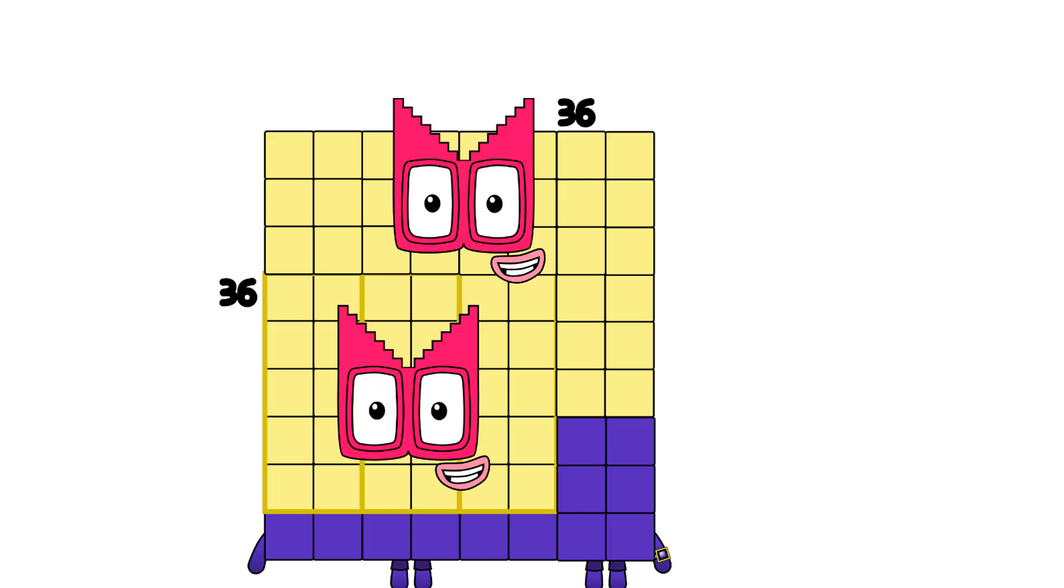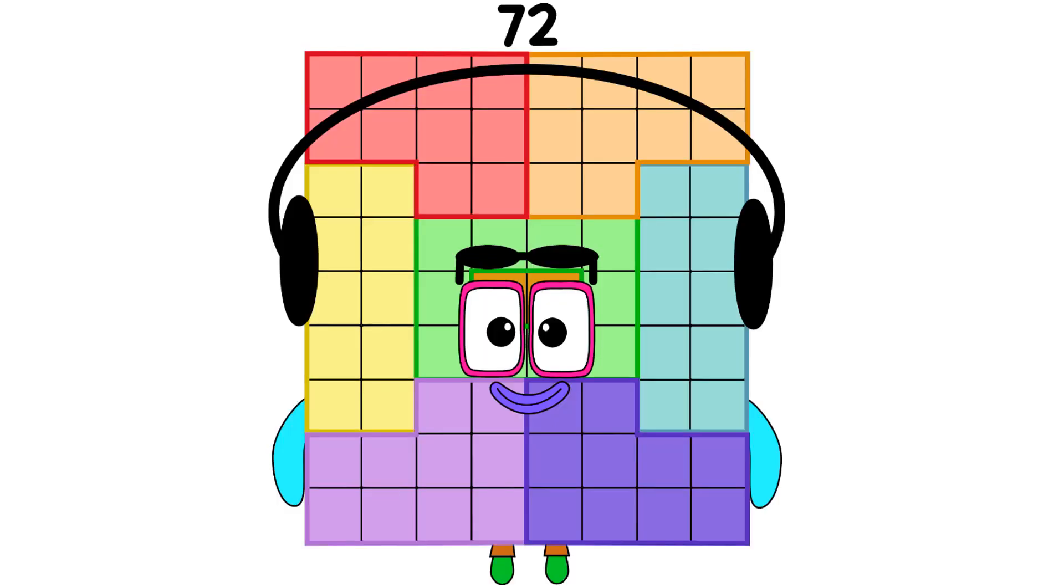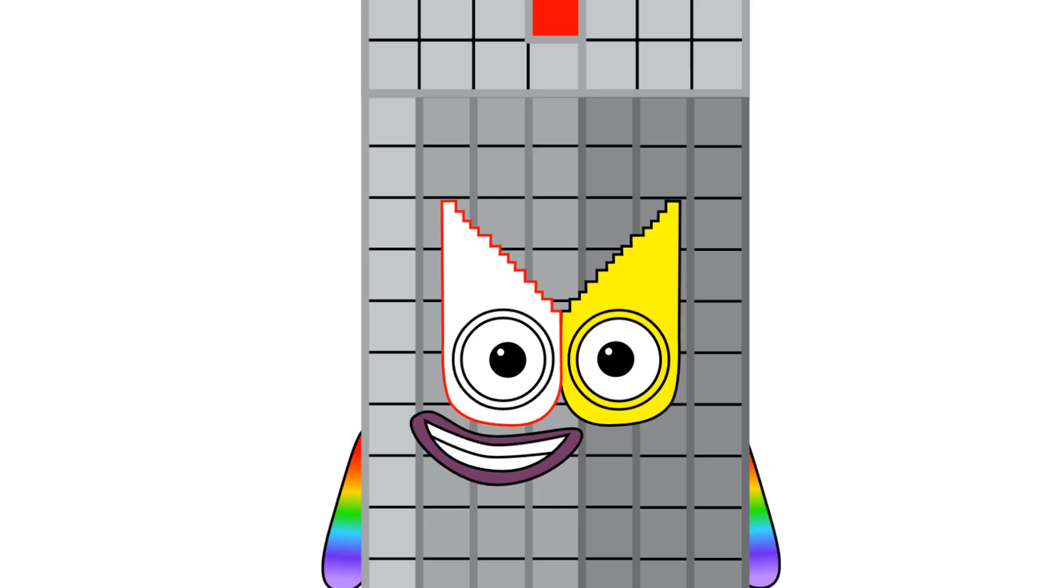36 times 2 equals 72. I'm 72. And I am a super rectangle. Simply, I am double 36s. And I am a DJ. Wow. Amazing.